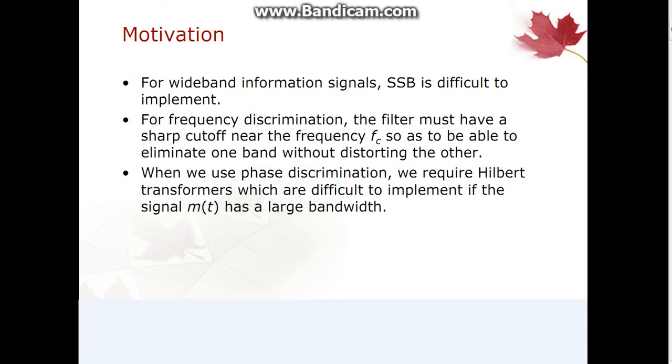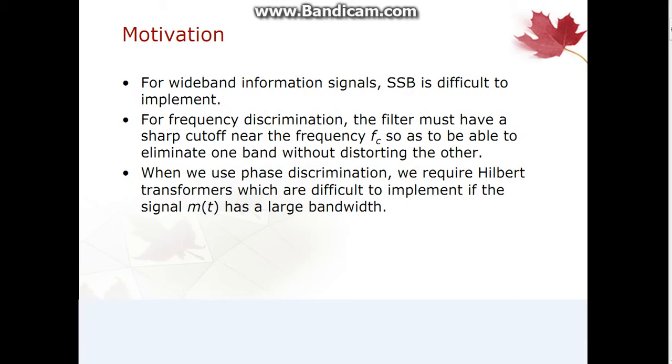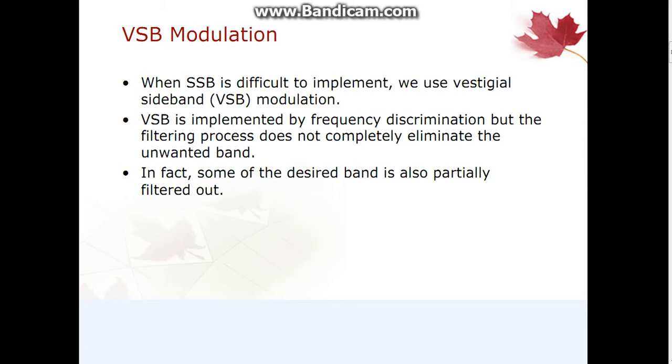For wideband information signals, SSB is difficult to implement. Basically, SSB-SC signal is generated with the help of two methods: first, frequency discrimination, and second, phase discrimination. With frequency discrimination, the filter must have a sharp cutoff near the frequency FC so as to be able to eliminate one band without distorting the other. When we use phase discrimination, we require Hilbert transforms which are difficult to implement if the signal M(t) has a large bandwidth. So in VSB modulation, when SSB is difficult to implement, we can use vestigial sideband modulation.